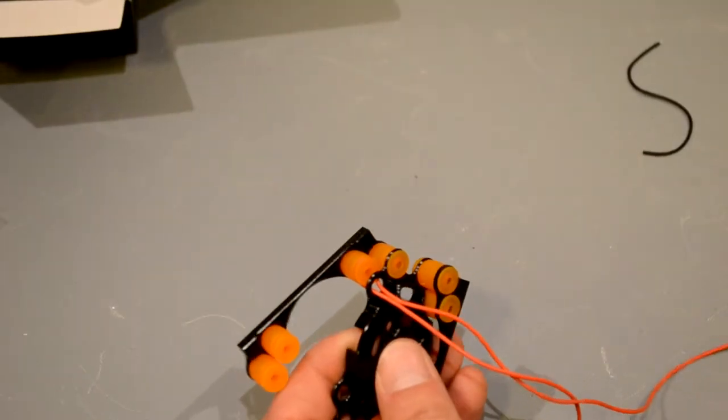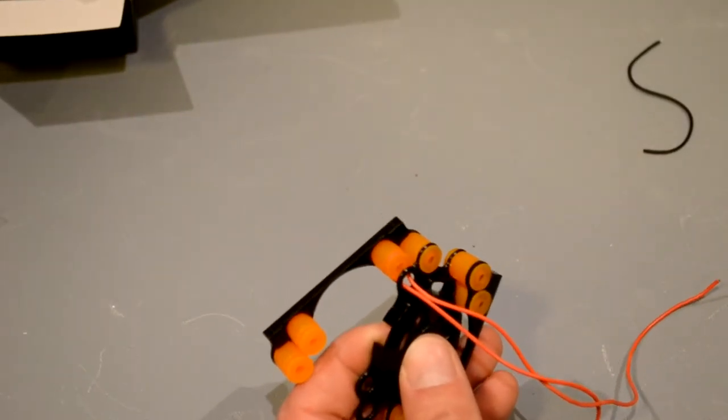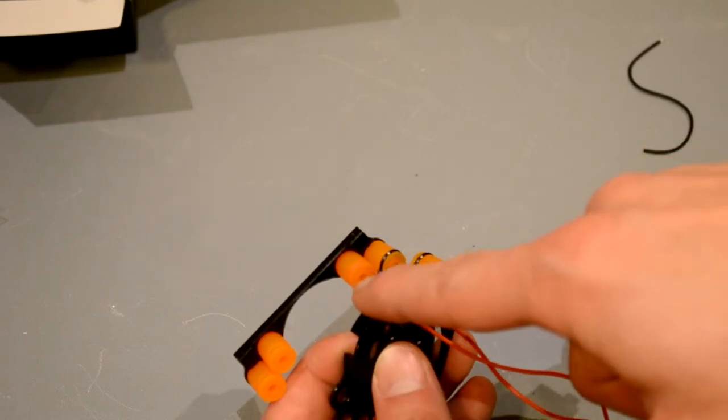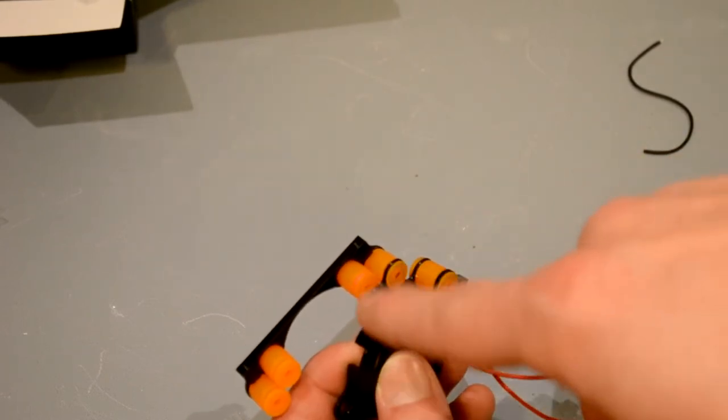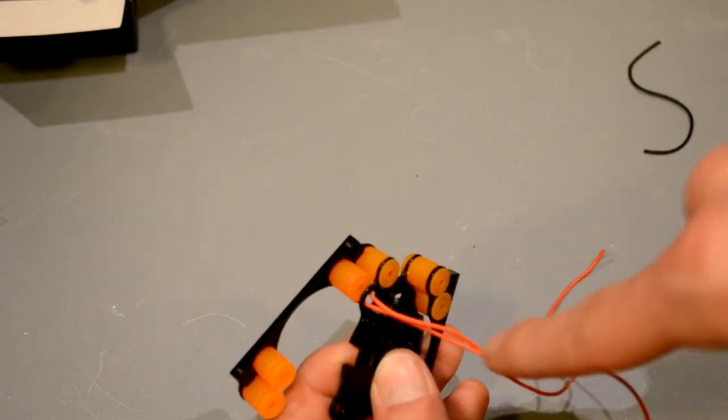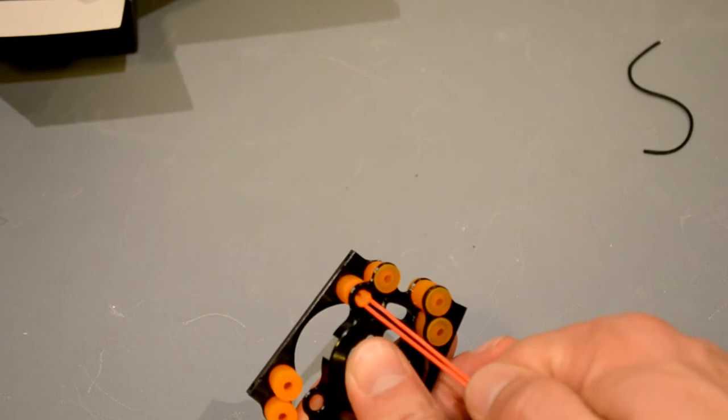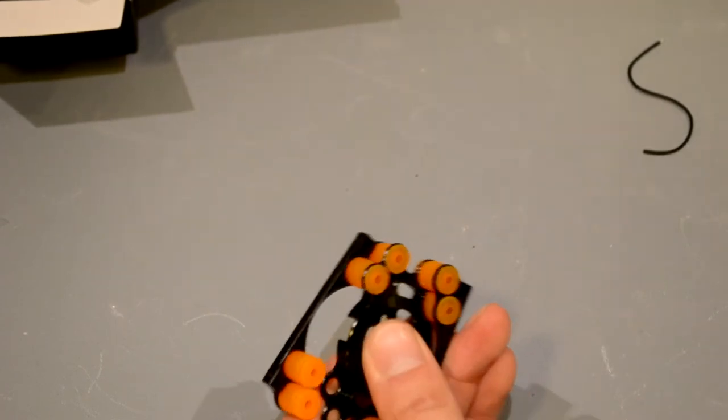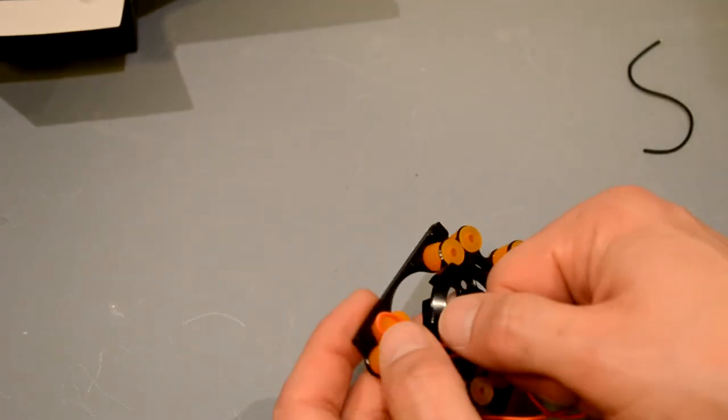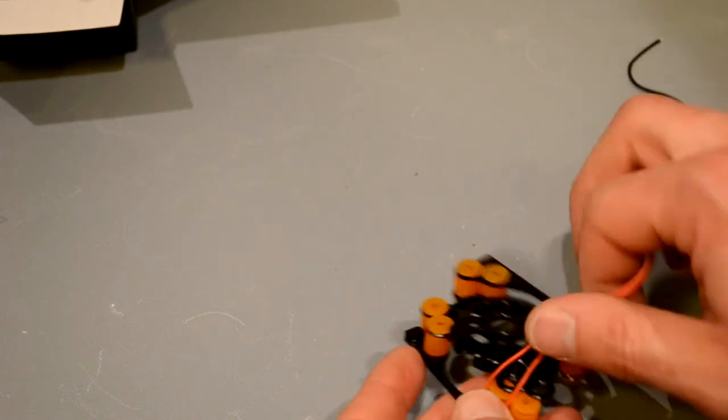All right. So not to worry. As you go along, this gets a lot easier. I've started wrapping in the middle of the servo lead, and only about a half a revolution. Now, just watch how easy this is. Pop. Just like that. Super simple, super quick, and you'll get better at it.